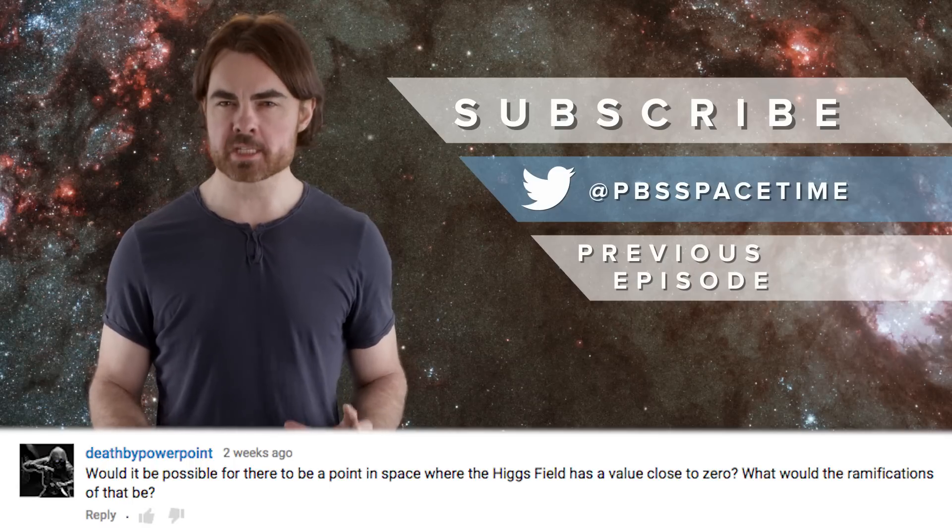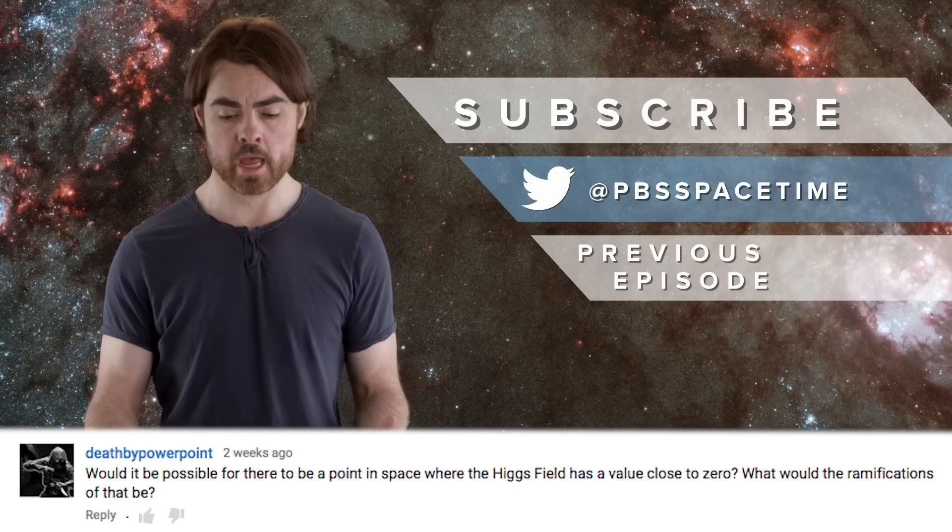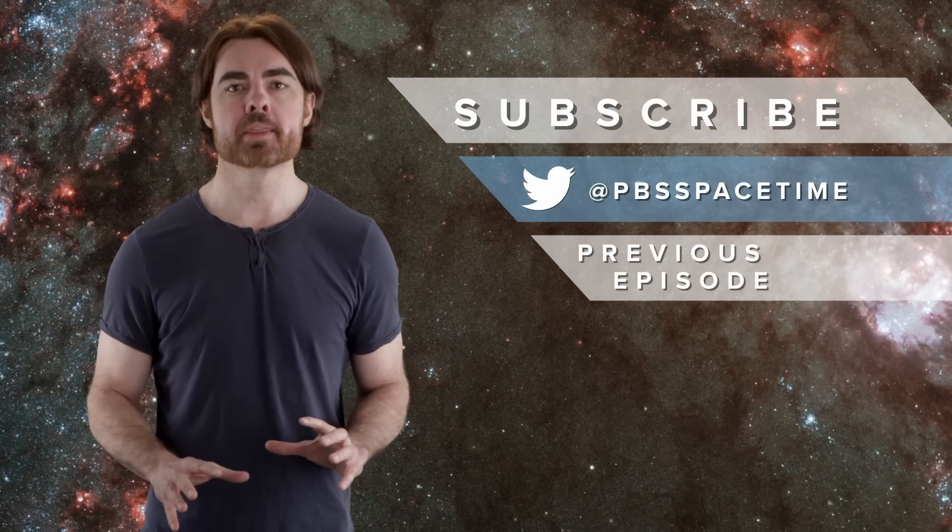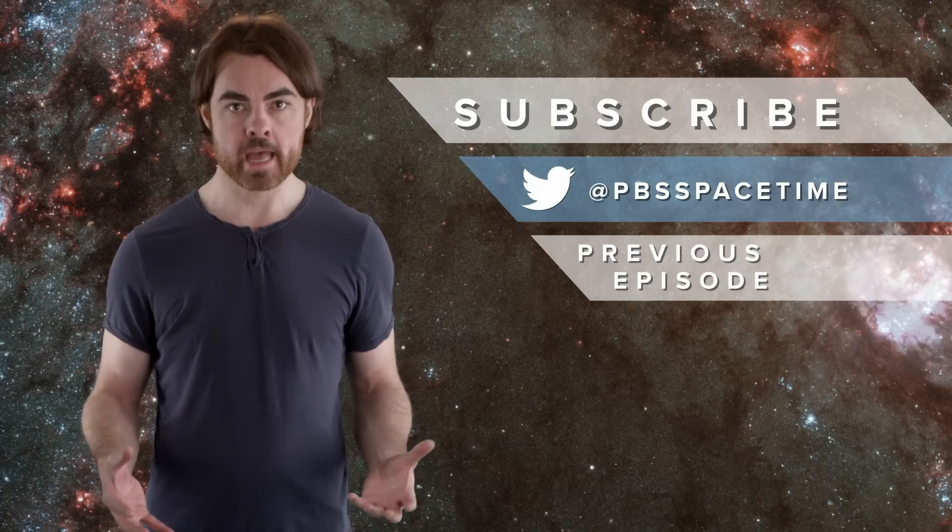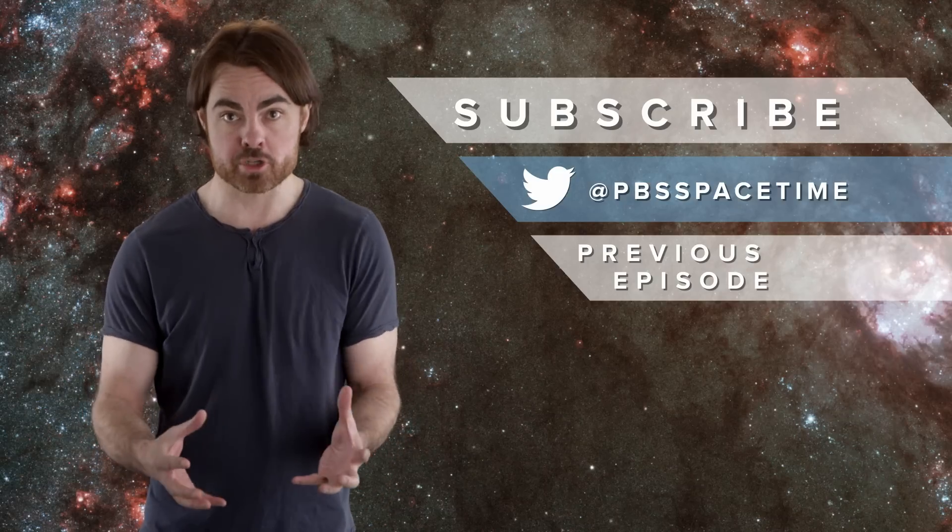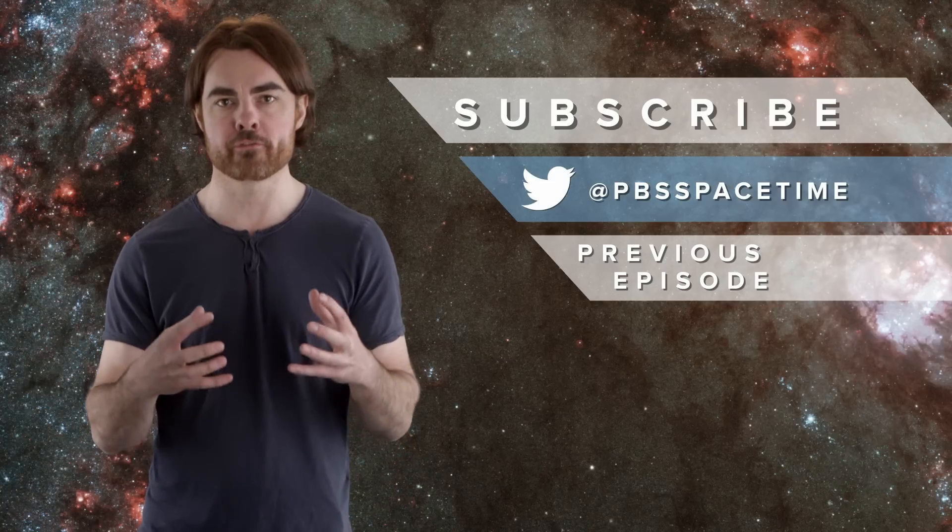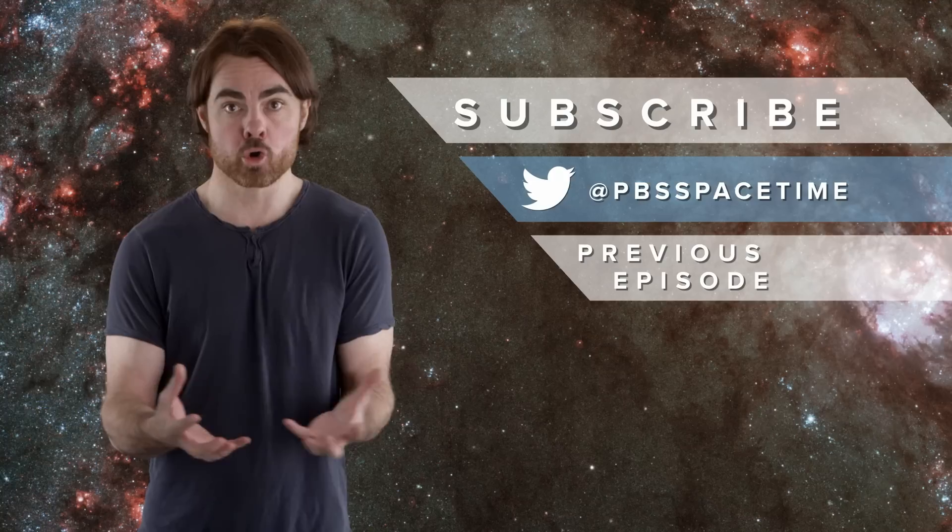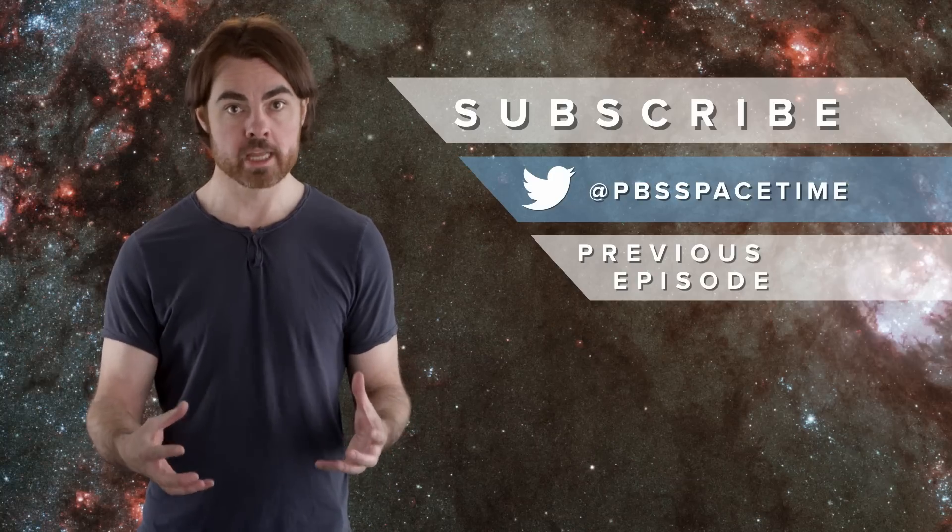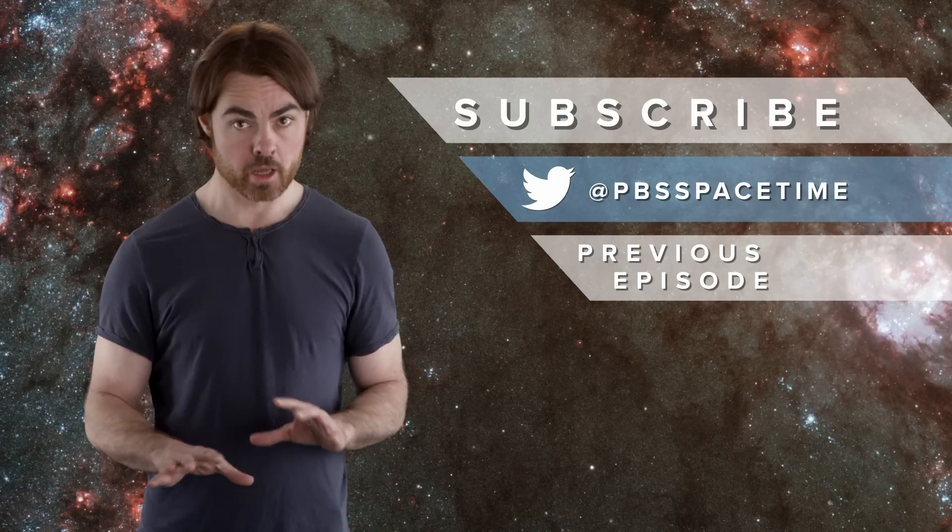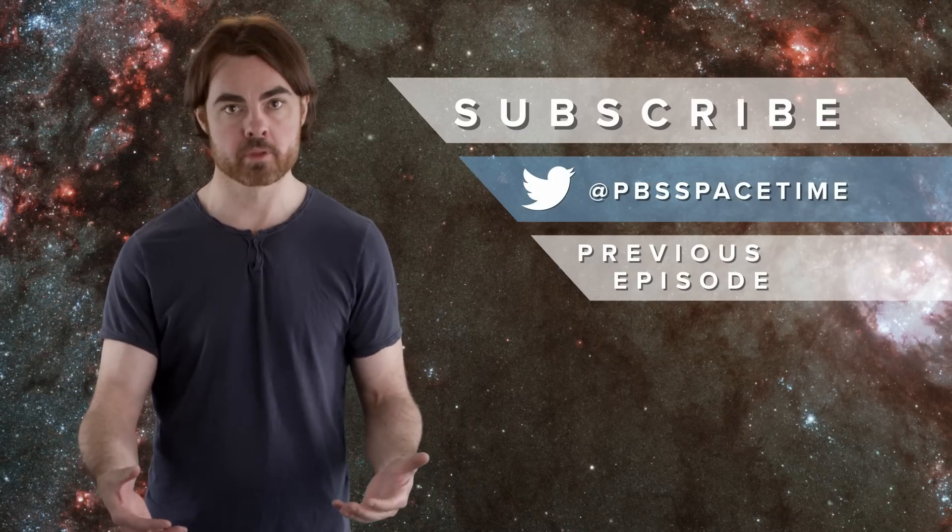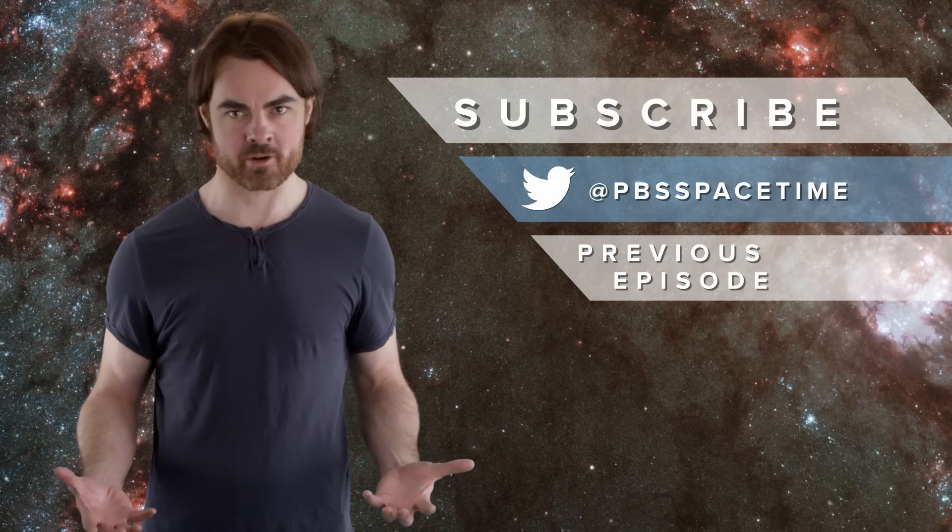Death by PowerPoint wonders whether there could be a point in space somewhere where the Higgs field takes on a value of zero, and what the ramifications would be. Well actually, yes. Or at least there was. At extremely high temperatures, the Higgs field takes on a value of zero everywhere. And it's believed that this was the case in the fraction of a second after the Big Bang. Then without an infinite source and sink of weak hypercharge, the weak nuclear force and the electromagnetic force were all the same force. Only when the universe cooled down did the Higgs field gain a non-zero value in a phenomenon called spontaneous symmetry breaking. Then the weak force carriers gained mass and became differentiated from the electromagnetic carrier, the photon. The ramifications? We wouldn't have atoms without a non-zero Higgs field.